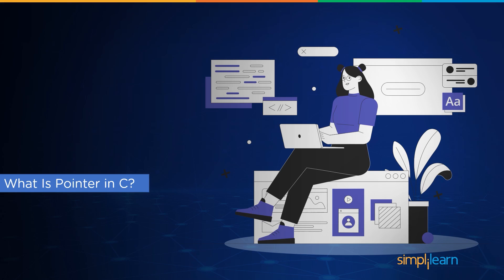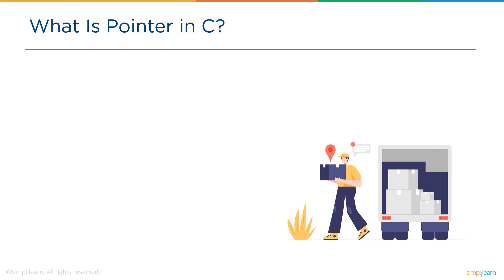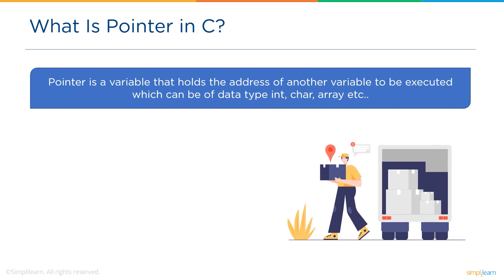A pointer in C is a variable that holds the address of another variable, which can be of data type int, char, array, etc. Pointers are used so that we can easily access the memory location, and it reduces the storage space. Pointers also help us to increase the speed of a program's execution.